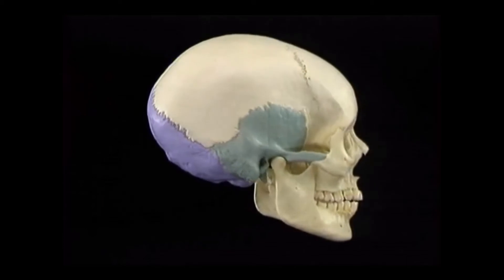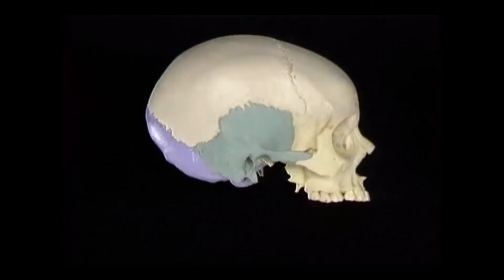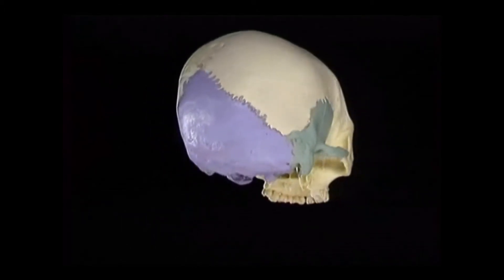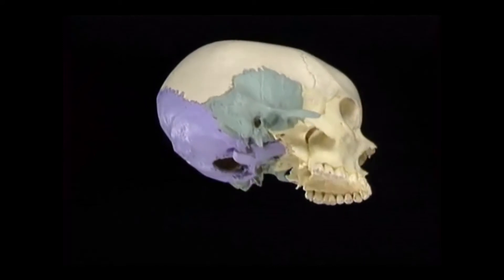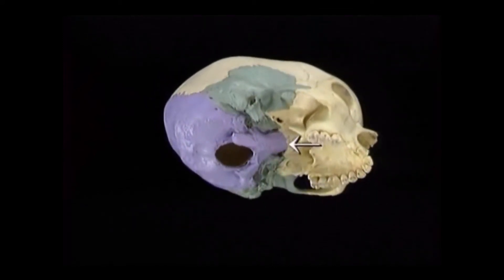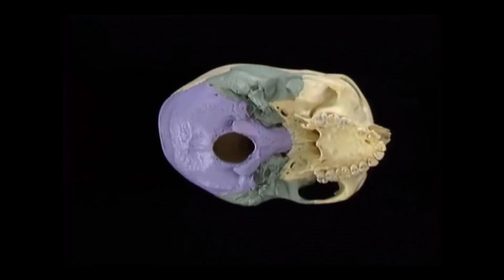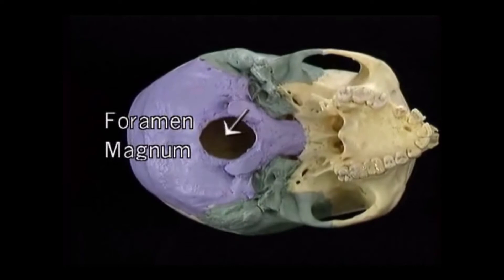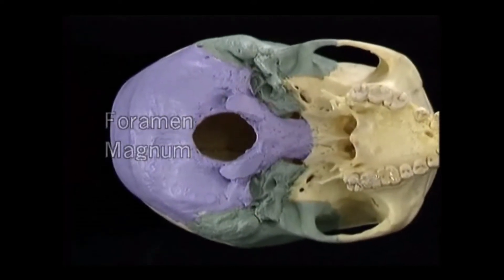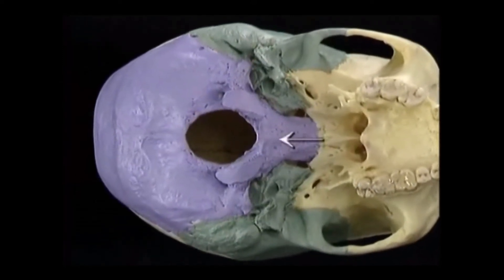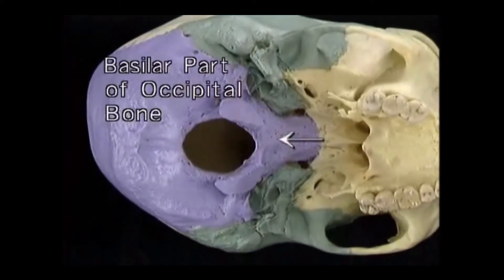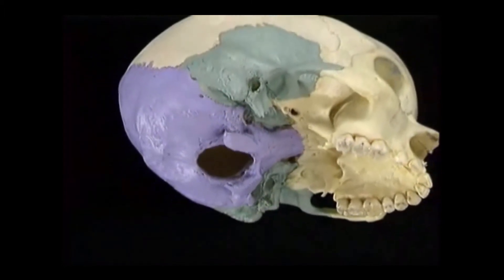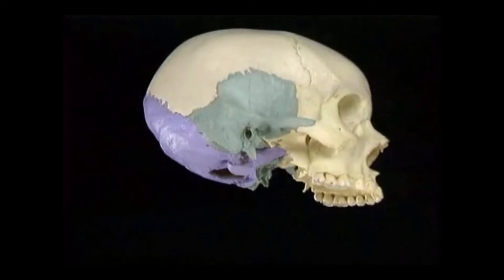To see the full extent of the occipital bone, we'll take the mandible out of the picture. The occipital bone extends all the way from here at the back to here underneath. The most striking feature of the occipital bone is this large opening, the foramen magnum, through which the spinal cord and its accompanying structures pass. The part of the occipital bone in front of the foramen magnum is called the basilar part, often referred to as the base of the occiput. The two temporal bones converge on it from each side.